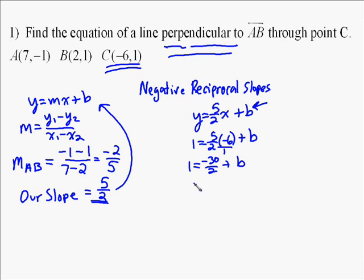And so we go ahead and simplify that, so you're going to have 1 equals negative 15 plus b, add 15 to both sides, and you end up with b equals 16.